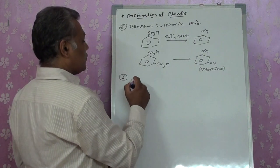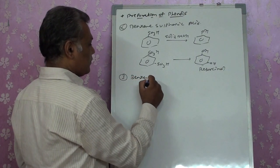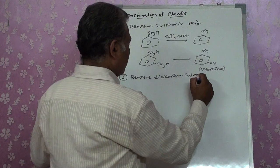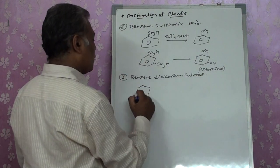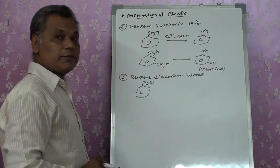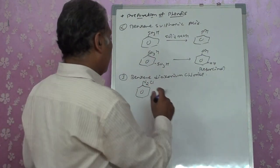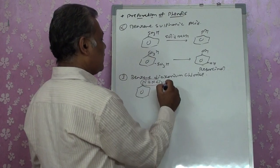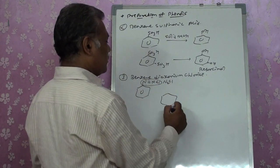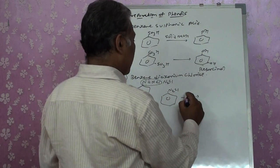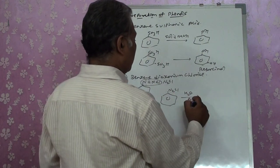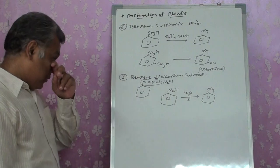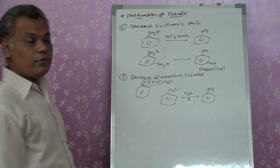The third method uses benzene diazonium chloride salt (N₂Cl, written as N≡N⁺Cl⁻), as used in the Sandmeyer reaction. When benzene diazonium chloride is reacted with H₂O on heating, it gets converted into phenol. So benzene diazonium chloride can also be converted into phenol.